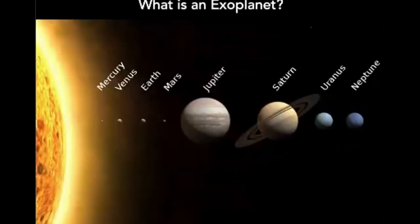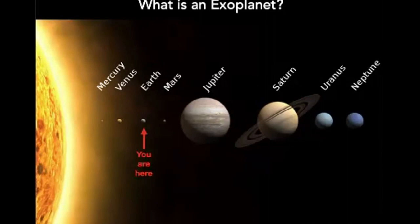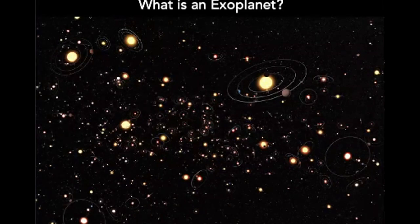Just to start with the basics — what is an exoplanet? I'm sure we're all familiar with the planets in our solar system, especially the one we live on. Our solar system has eight planets, sorry to Pluto. They're shown here with sizes to relative scale, although the distances are not to scale. Together, these eight planets plus any asteroids, comets, dwarf planets, and dust make up what we call the solar system. An exoplanet is simply a planet that orbits some other star, not the sun — shorthand for extra-solar planet, or outside-the-solar-system planet.